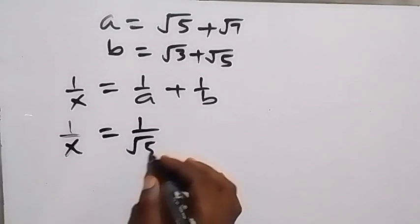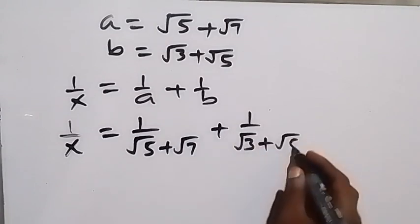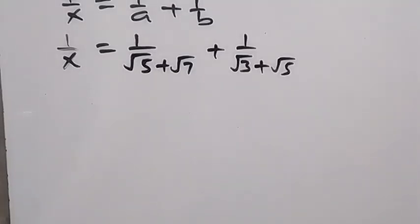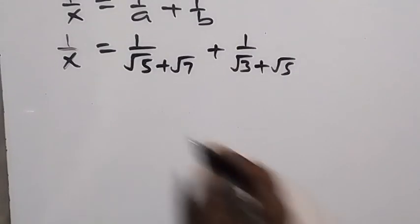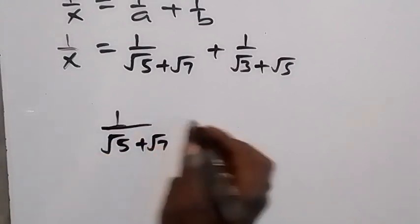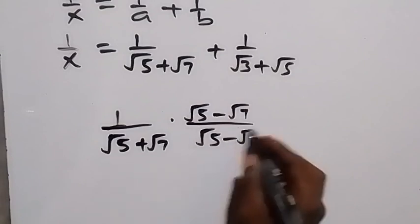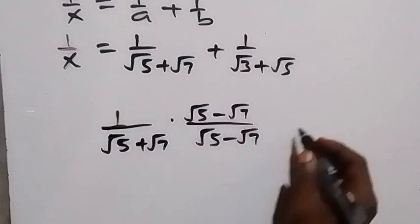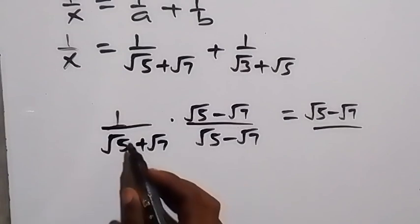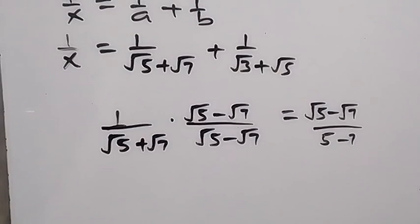Substituting a and b, 1/x becomes 1/(√5 + √7) plus 1/(√3 + √5). We can rationalize each of these. For the first fraction, 1/(√5 + √7), we multiply by the conjugate (√5 − √7) over (√5 − √7). The denominator becomes √5² − √7² = 5 − 7 = −2.